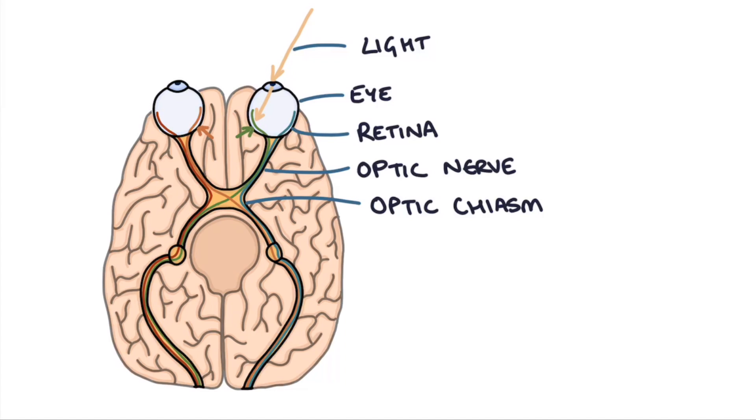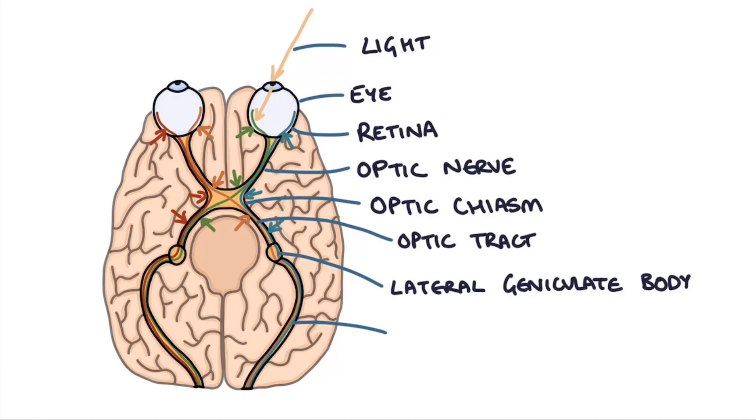At this point, the outer halves of the visual fields, or the temporal half of the visual field, cross over, and the inner half of the vision travels along the outside. These signals then enter into the optic tract, then into the lateral geniculate body, then the visual impulses travel through the optic radiations and into the occipital lobe and visual cortex at the back of the brain where the signal is processed.